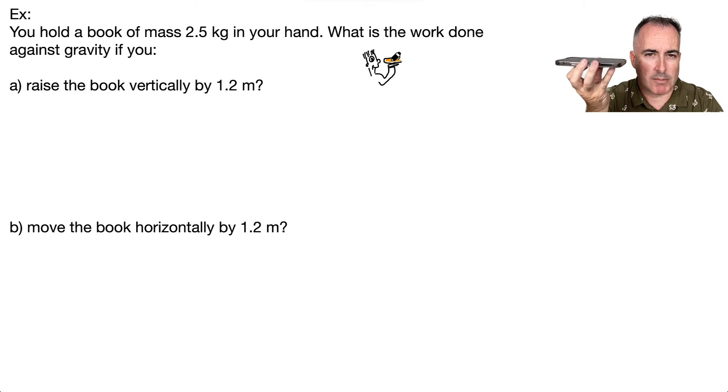If I raise it vertically, there's gravity going down, but my applied force is going to be up. The displacement is also up. Therefore, theta is going to be equal to 0 degrees, and cosine of 0 is 1. So work is just F times S.